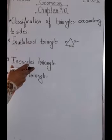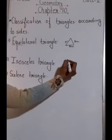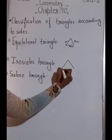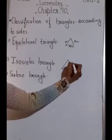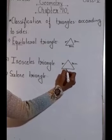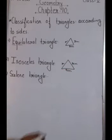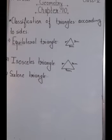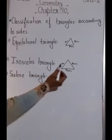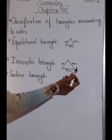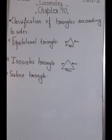Next is the isosceles triangle. If two sides of a triangle are the same — for example, three centimetres, three centimetres, and four centimetres — you can see two sides are the same and one is different. A triangle in which any two sides are equal is called an isosceles triangle.